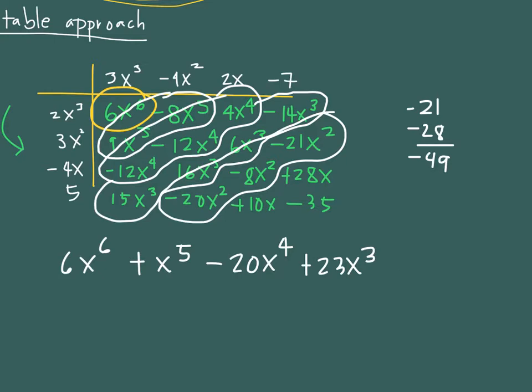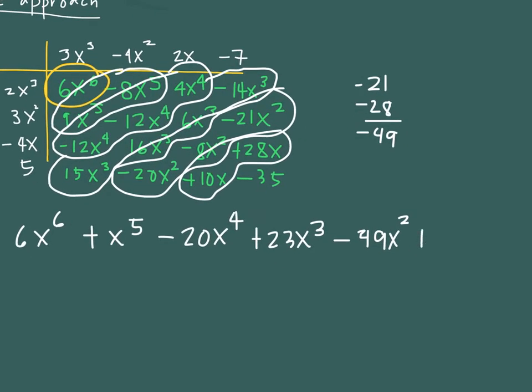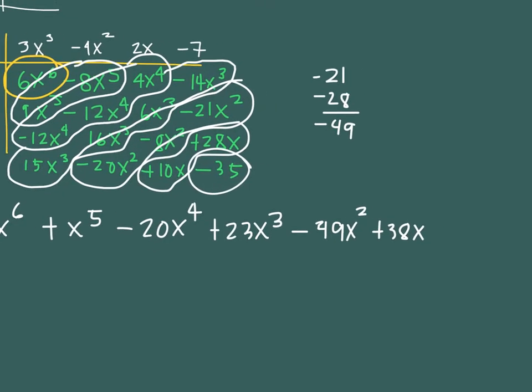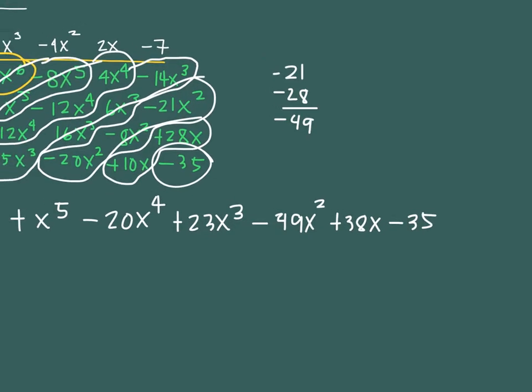And then for the x, you have a 10x and a 28x. That is simply 38x. And then finally, the constant value, negative 35, or minus 35. So that's how you add.